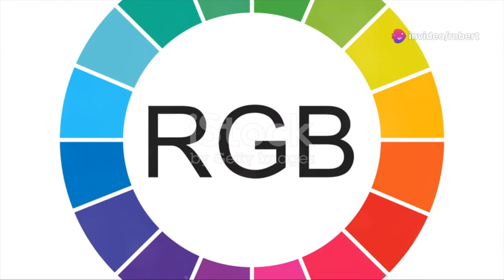Our journey begins with RGB, an acronym that stands for Red, Green and Blue. Imagine these three colours as primary cosmic rays, the building blocks of light itself. When combined in varying intensities, they have the power to create millions of colours illuminating our screens with vibrant hues.